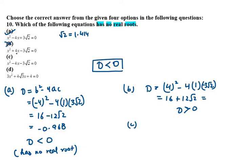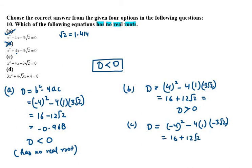For option C, D equals b² - 4ac. Here b is -4, a is 1, and c is -3√2. We get 16 plus 12√2 again, which is greater than 0. Therefore, this equation also has two distinct real roots, so option C is cancelled out.